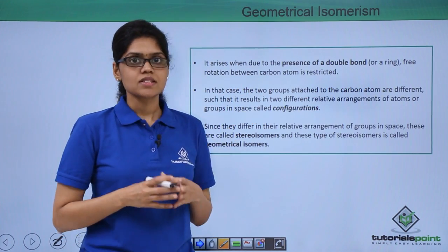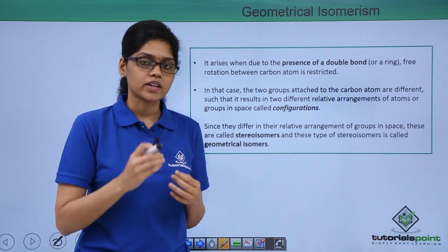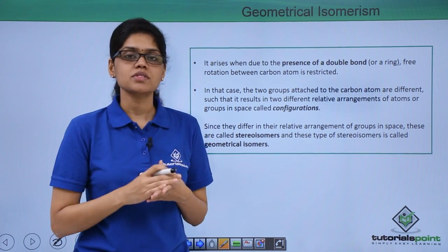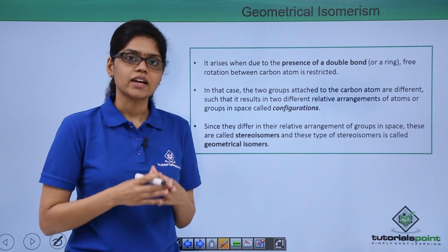Geometrical isomers arise when a compound has double bond or in those compounds where there is rigid structure like a ring.